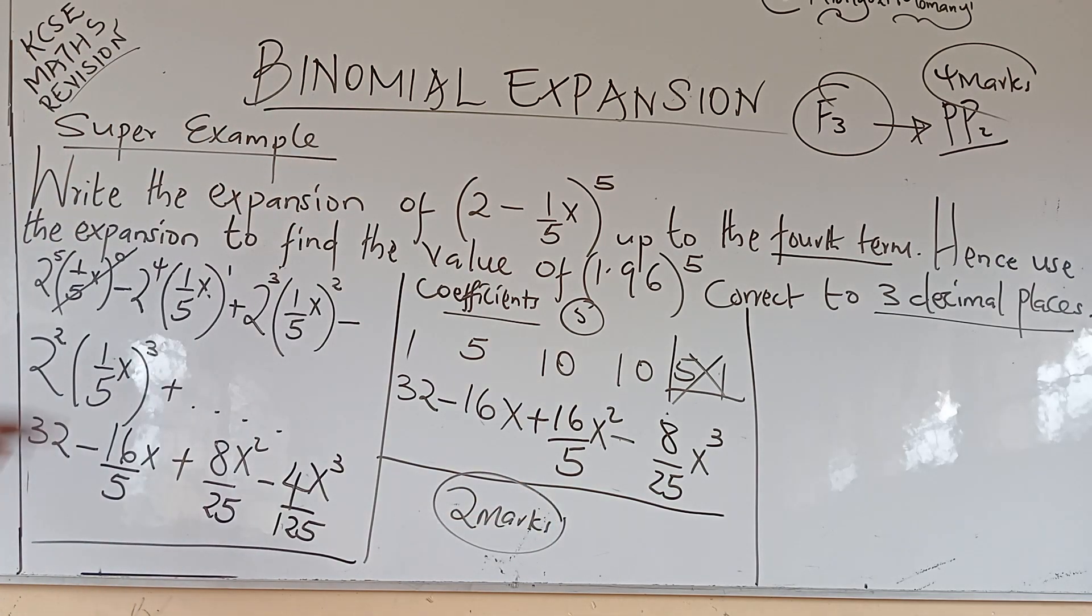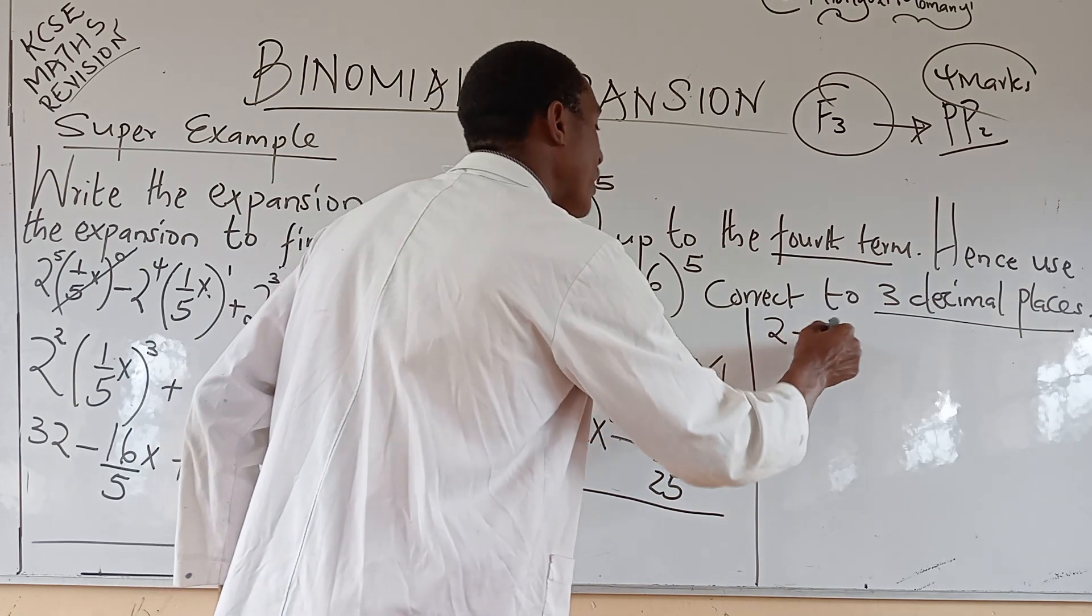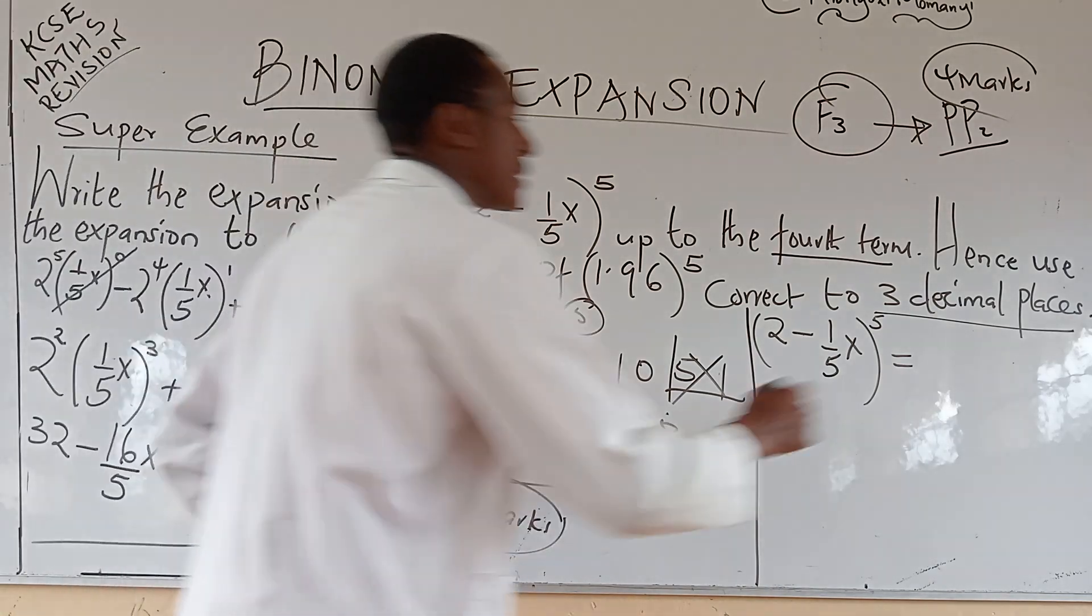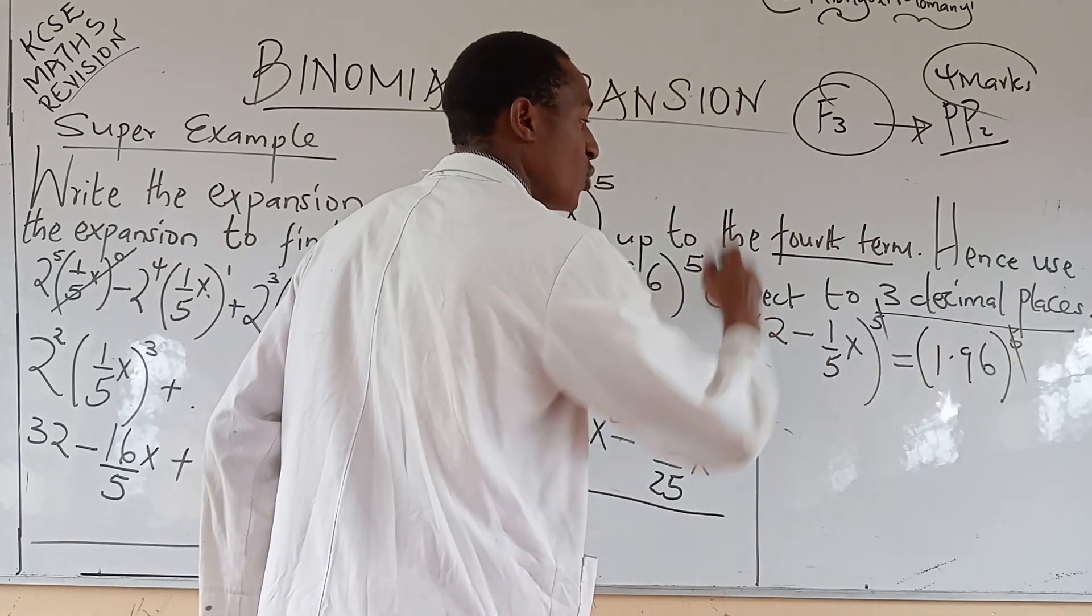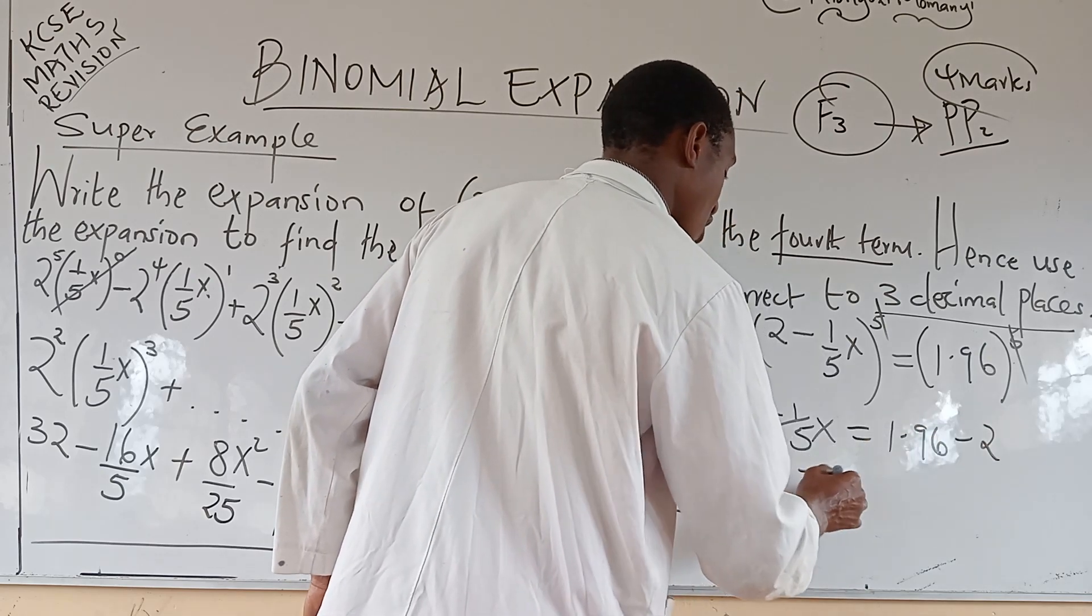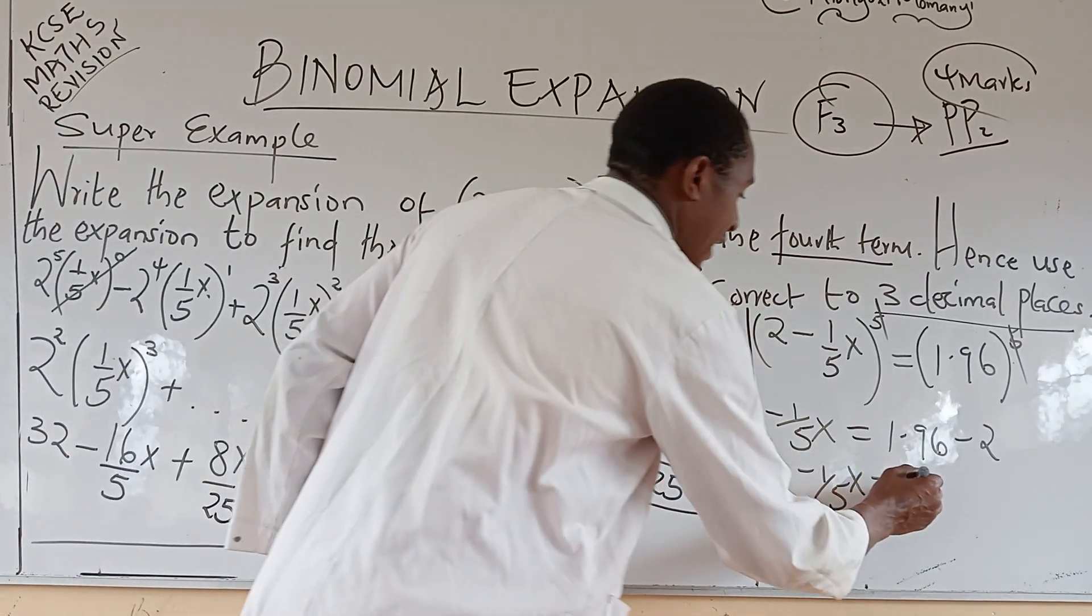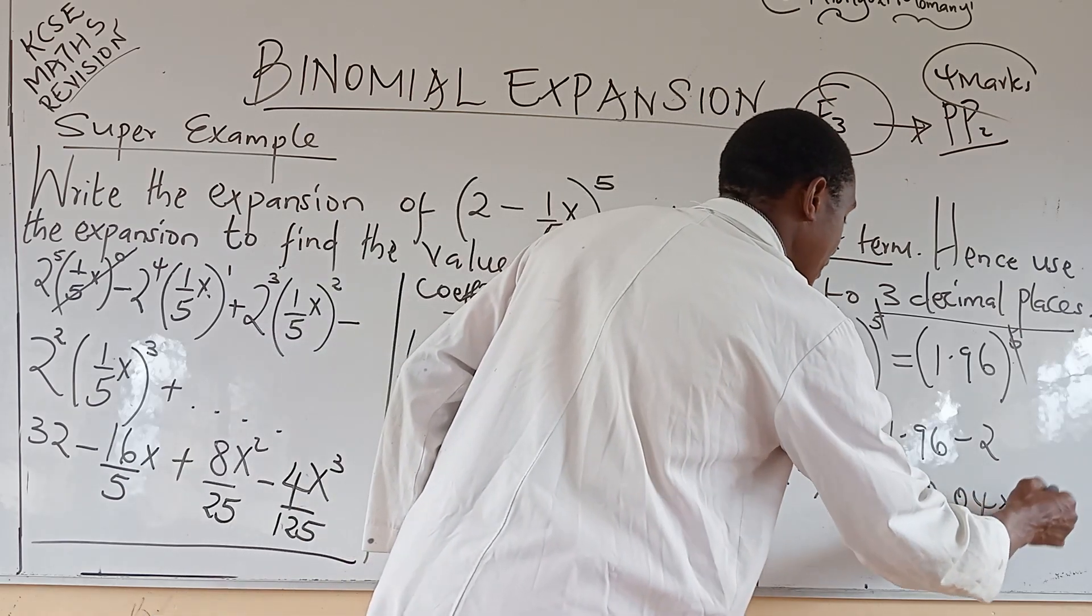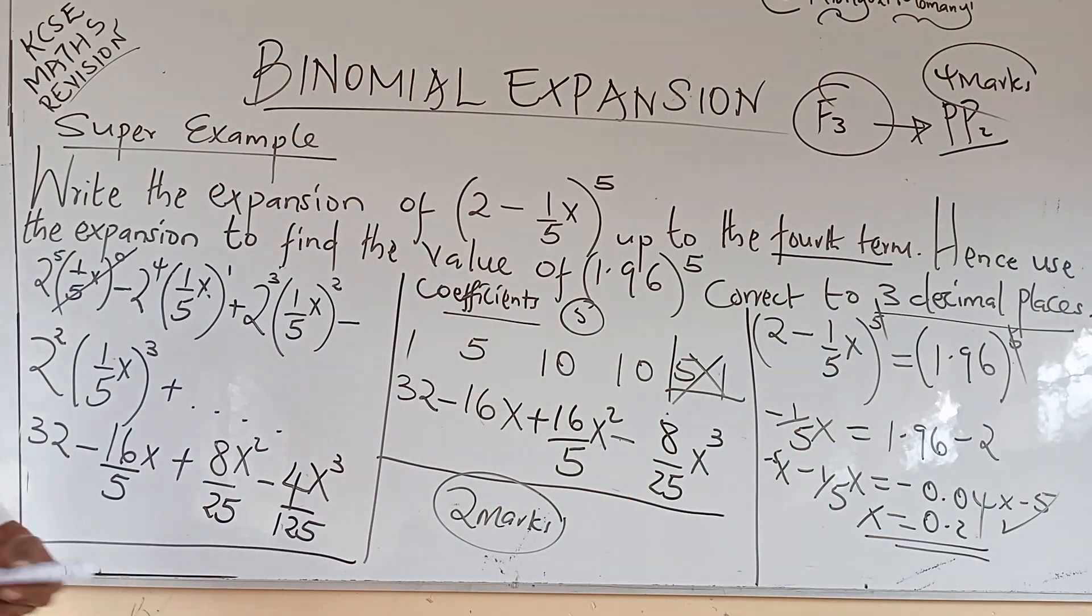We look for the value of x by equating. Two minus one over five x raised to power five equals one point nine six raised to power five. Cancel the powers. You have two. We can take two to the other side. Negative one over five x equals one point nine six minus two. Negative one over five x equals negative zero point zero four. You multiply by negative five on both sides. So, your x equals zero point two. Once you get the value of x, you have another one mark.